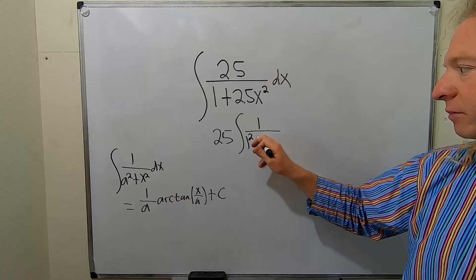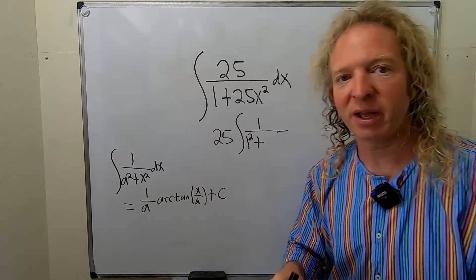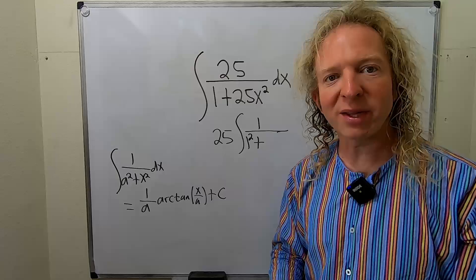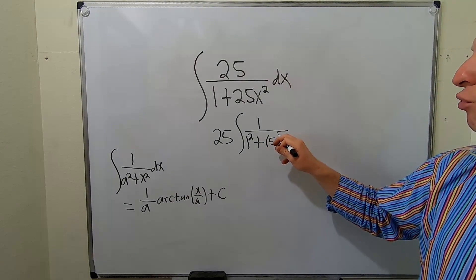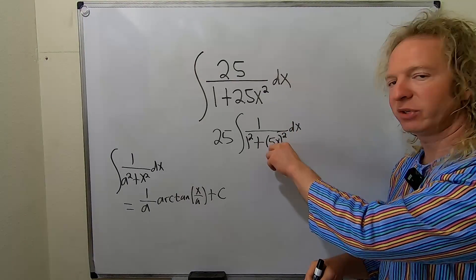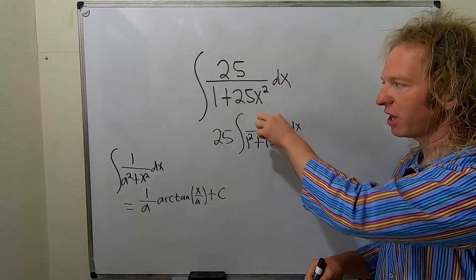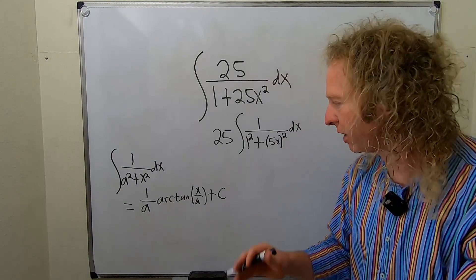And then what we can do is we can take the 25x squared and write it as a quantity squared like this. This is 5x parentheses squared. Think about it. If you square the 5, you get 25. If you square the x, you get x squared. So now it's perfect, right? It matches.